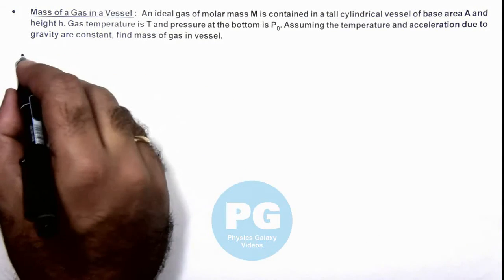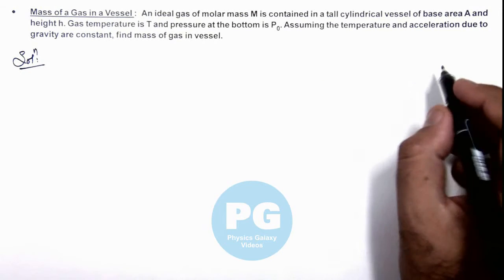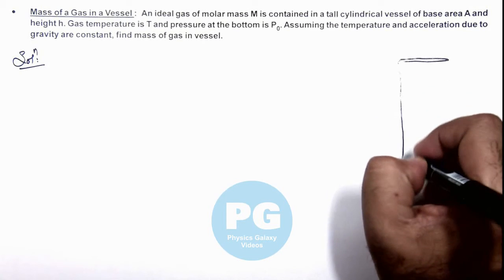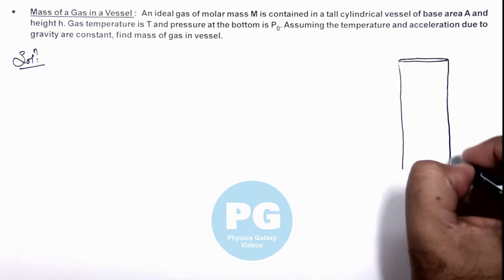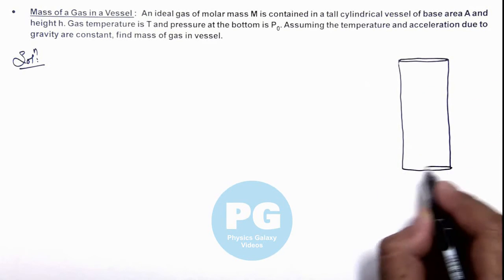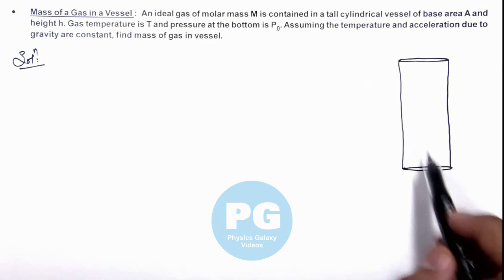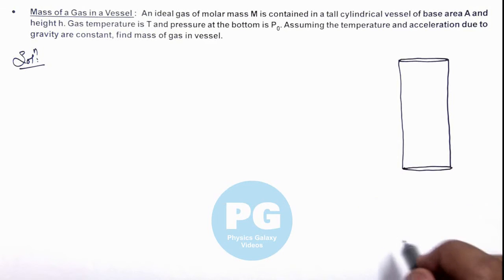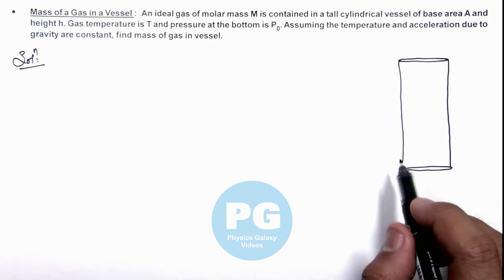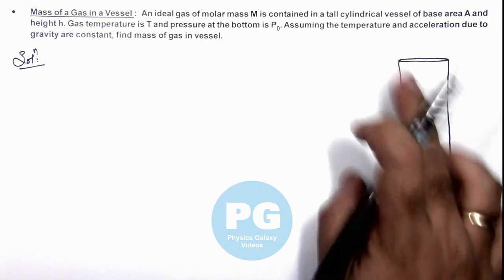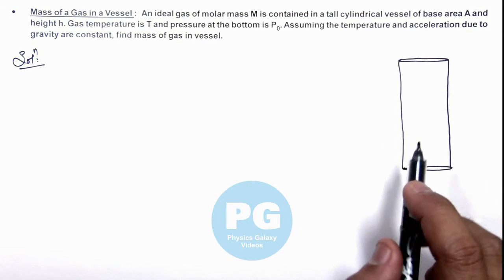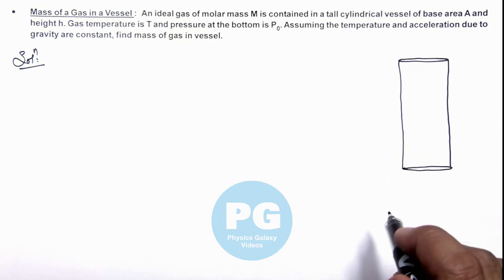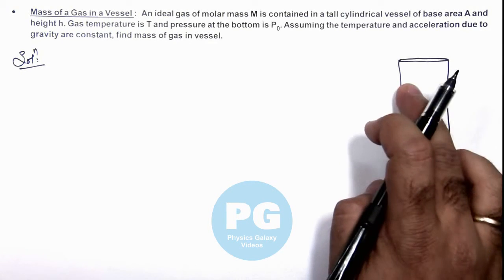Here, we can see we are given with a closed cylindrical vessel, and in this vessel the gas is filled up to a height h. If we consider the acceleration due to gravity is constant, then certainly the density will vary in this container. As we move up, the gas pressure decreases.